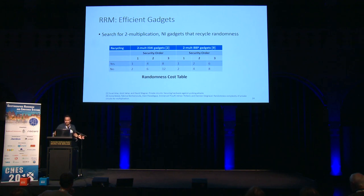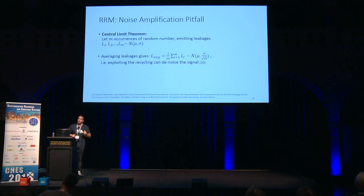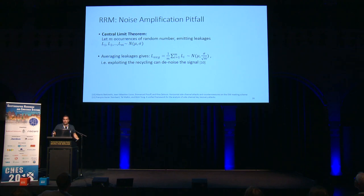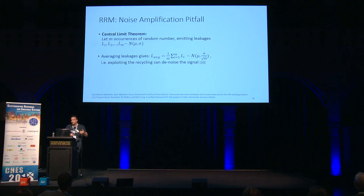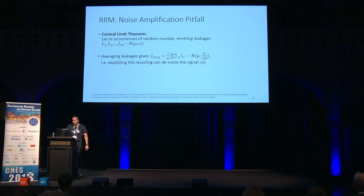So far, everything looks okay — we can find non-interferent gadgets that recycle randomness and improve the situation. But the problem starts when we move away from formal security and towards the noise amplification stage. As a reminder of the central limit theorem in our context: assume a random number is recycled and emits leakages multiple times — L1, L2, …, LM — all following a normal distribution. If an adversary averages those leakages, the resulting distribution is again normal but the standard deviation is divided by a factor. Essentially, someone who can observe those recyclings will be able to denoise the signal. Even if the implementation is probing-secure, repetition will hurt you.